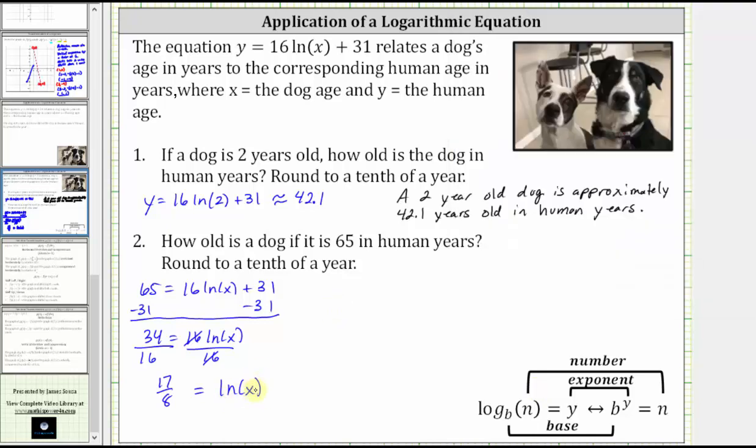Now that we have the natural log of x isolated, we write the log equation as an exponential equation. Remember, natural log is log base e. So e is the base, 17 eighths is the exponent, and the number is x. We have e raised to the power of 17 eighths is equal to x.